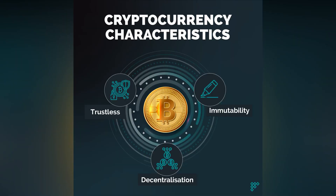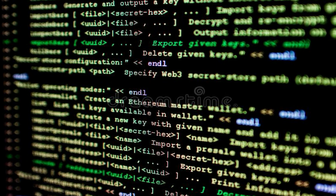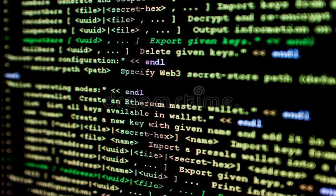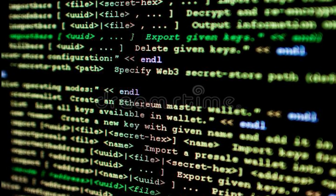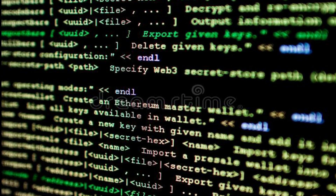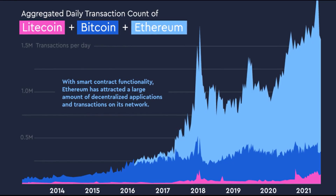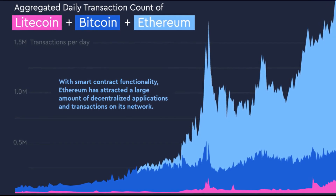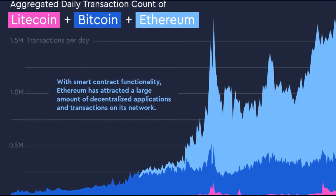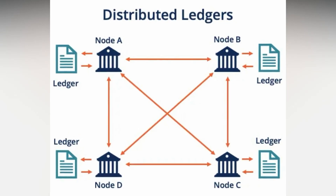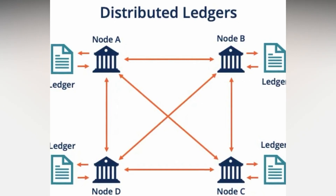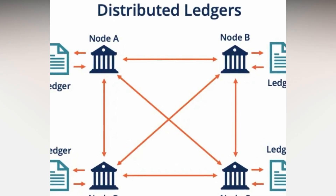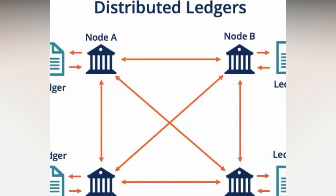Cryptocurrencies have peculiar characteristics that distinguish them. The following are the constituent elements. First, a set of rules called a protocol — a computer code that specifies the way in which the participants can carry out transactions. Second, a sort of ledger, called a distributed ledger or blockchain, which unchangeably preserves the history of transactions. Third, a decentralized network of participants who update, store, and consult the distributed ledger of the transactions according to the rules of the protocol.